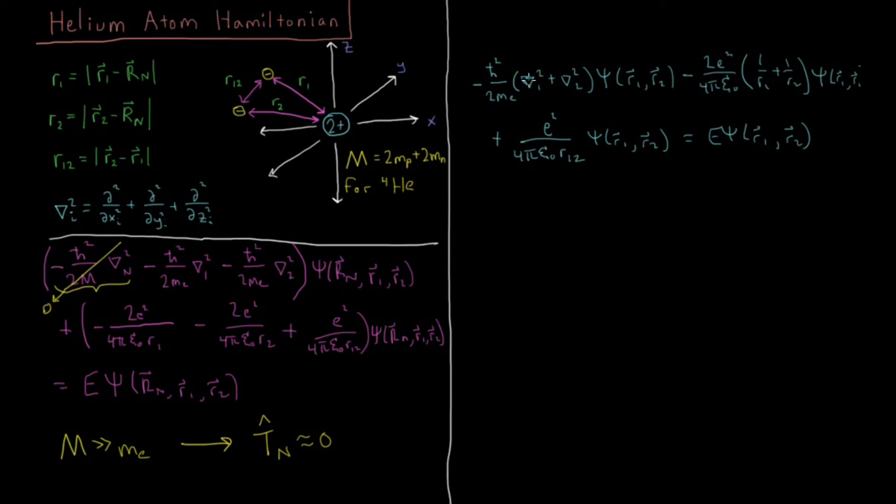Now normally our strategy in something like this in a multidimensional wave function would be to do some type of separation of variables. We would want to separate the wave function into something which only depends on the position of electron 1 and something that only depends on the position of electron 2. We could do that if we didn't have this term here. You see the kinetic energy, this term depends on r1, this term depends on r2. And in the electron-nuclear attraction, this term depends on r1, this term depends on r2.